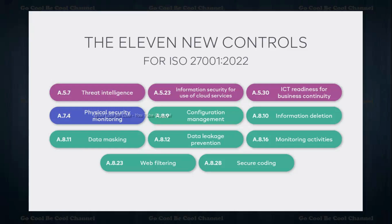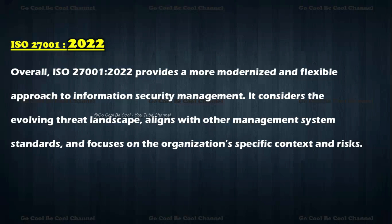The major changes in the 2022 revision include these 11 new controls. Key focus areas are Threat Intelligence, Physical Security Monitoring, ICT Readiness for Business Continuity, Information Security for Use of Cloud Services, and Threat Intelligence. These three areas indicate the new transformations related to cloud, business continuity, and threat intelligence — mainly reflecting the shift toward cyber security in 2022.